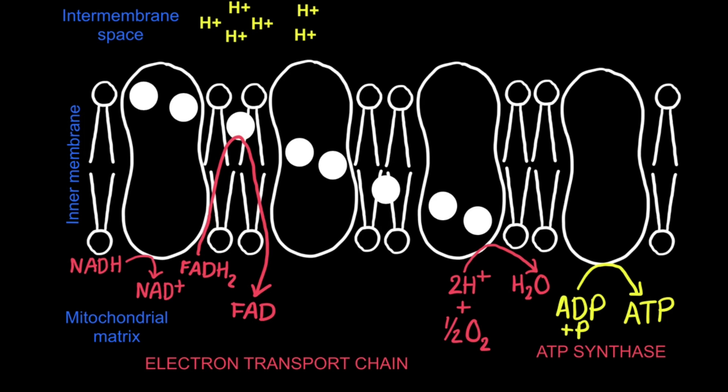For every one molecule of glucose, a total of 32 ATP are produced through the electron transport chain and chemiosmosis.